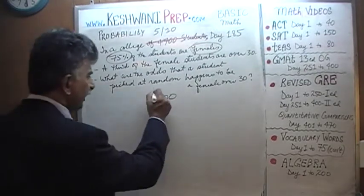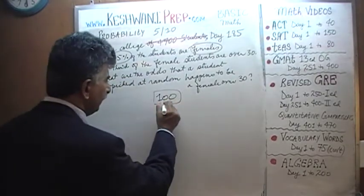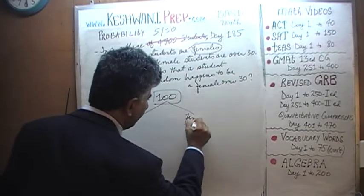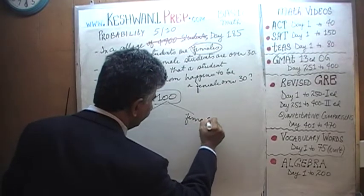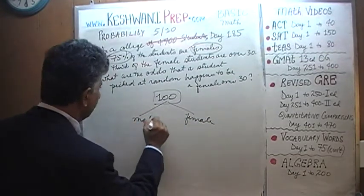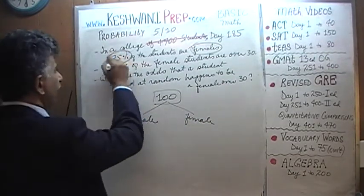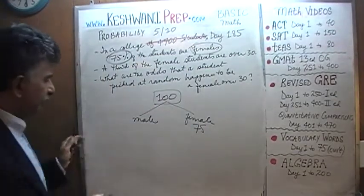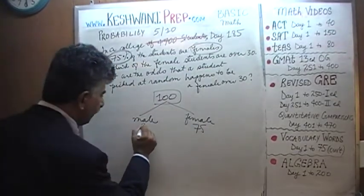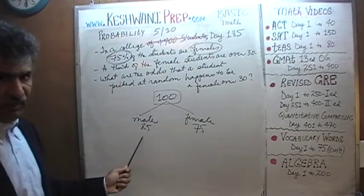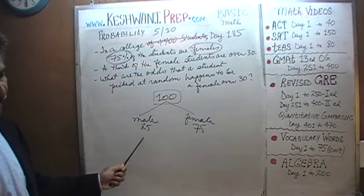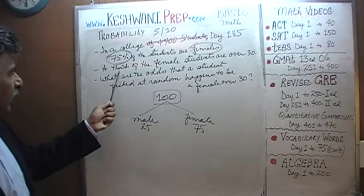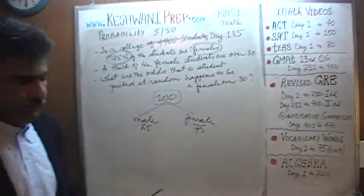So pretend there are 100 students. We are told that 75 of them are female and 25 are male. Out of every 100, 75 are female and 25 are male. The 25 male figure is not what we're interested in, but that's what it is.